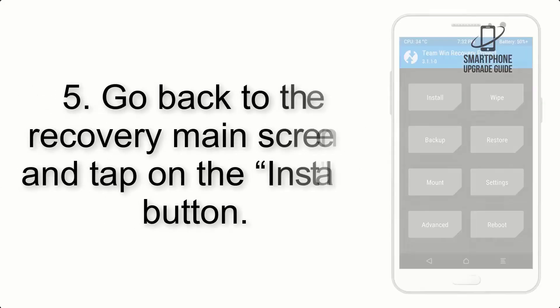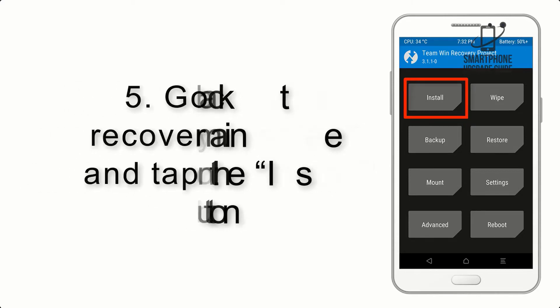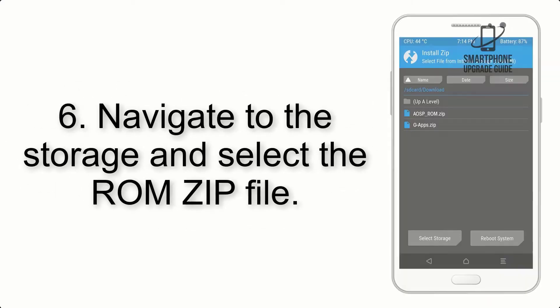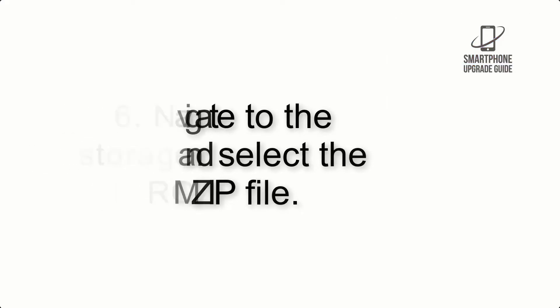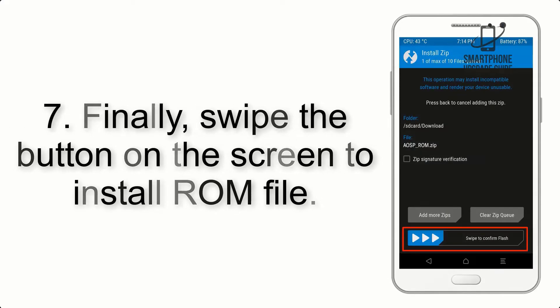Step 4: Swipe the button to wipe the device. Step 5: Go back to the recovery main screen and tap on the Install button. Step 6: Navigate to the storage and select the ROM zip file.